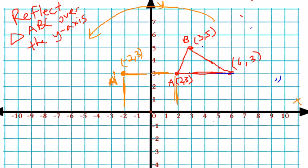Let's do the same to point B. So the reflection for point B would be right here. This would be B prime. And this would be the ordered pair negative 3, 5.